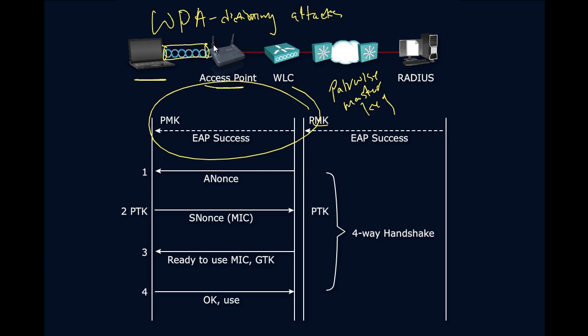But WPA doesn't stop there — it adds to this process. What it's going to do is, instead of simply handing out keys at the end, the access point authenticator is going to send an ANONCE. What is an ANONCE? It's just a random number. That random number is sent across and received by the supplicant, or client.